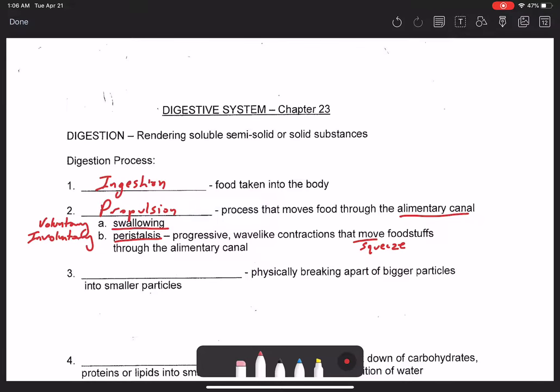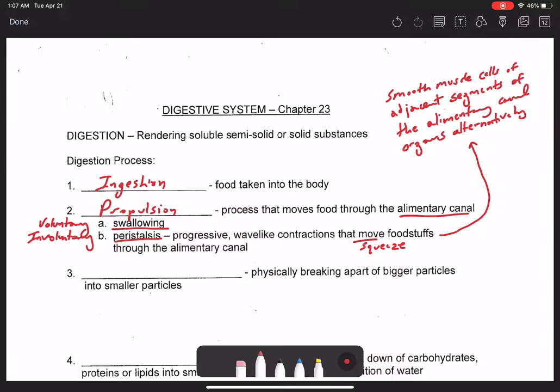And more specifically, if you want a more precise definition of what peristalsis really is, is that the smooth muscle cells of adjacent segments of the alimentary canal or GI tract organs alternatively contract and relax.